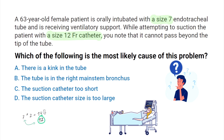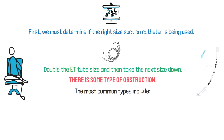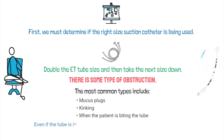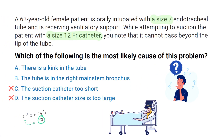Looking back at the answer choices, this means we can rule out C and D automatically. In general, whenever you are unable to pass a suction catheter down the ET tube, it usually indicates there is some type of obstruction. The most common types include mucus plugs, kinking, or when the patient is biting the tube. Even if the tube is in the right mainstem bronchus, you should still be able to pass the suction catheter beyond the tip of the tube. So the correct answer is A — there is a kink in the tube.